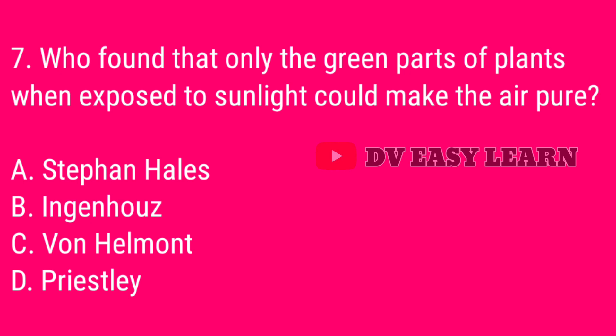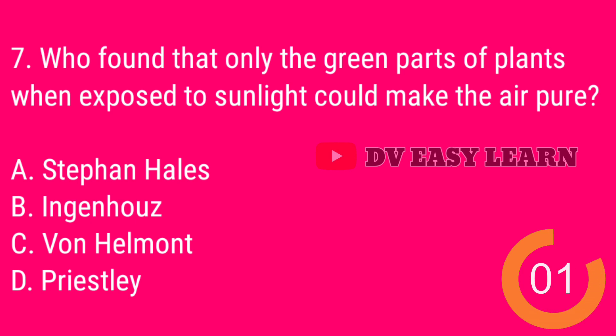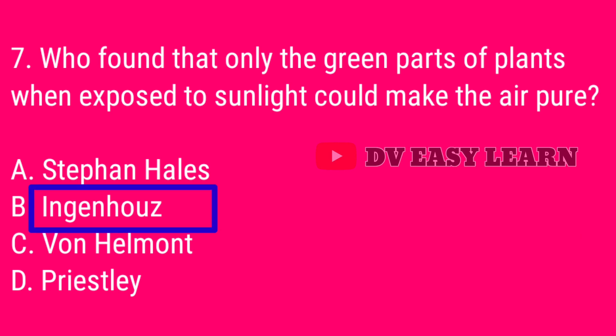Question number 7. Who found that only the green parts of plants, when exposed to sunlight, could make the air pure? Correct answer: Jan Ingenhousz.